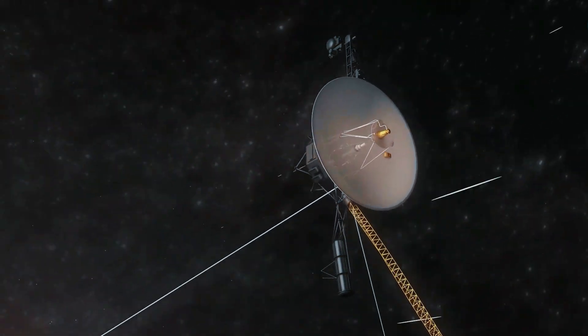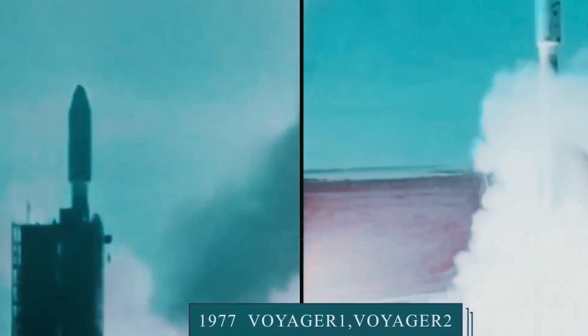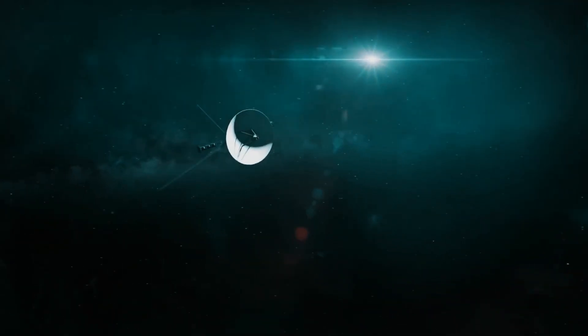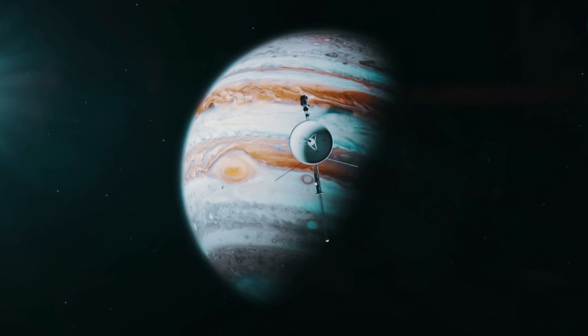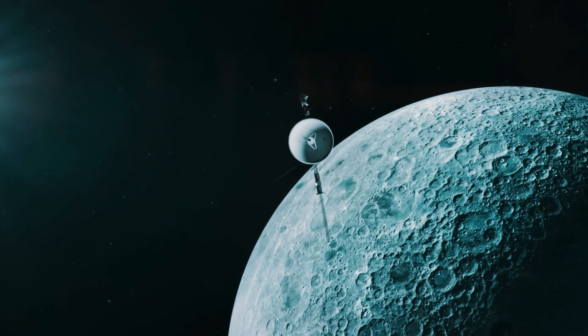This spacecraft is very special for the space industry. Launched in 1977, both Voyager 1 and Voyager 2 were intended to study the outer regions of the solar system. Scientists wanted to thoroughly research Jupiter, Saturn, Uranus, and Neptune, which is why these spacecraft were launched.